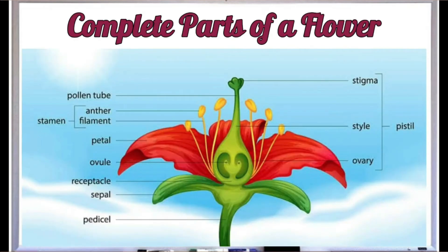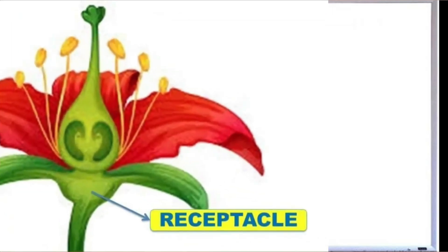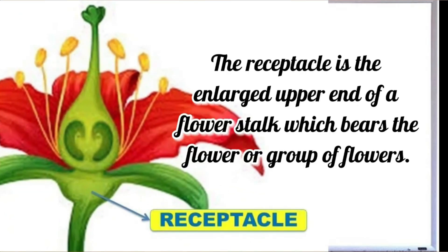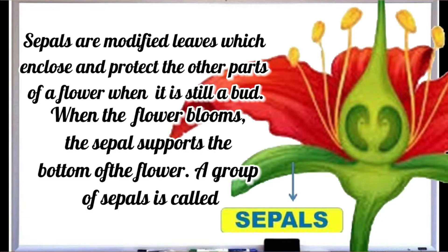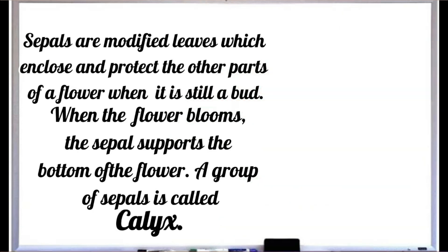A complete flower has stamen, petal, carpel or pistil, receptacle, and sepal. The receptacle is the enlarged upper end of a flower stalk which bears the flower or group of flowers. Sepals are modified leaves which enclose and protect the other parts of a flower when it is still a bud. When the flower blooms, the sepal supports the bottom of the flower. A group of sepals is called calyx.